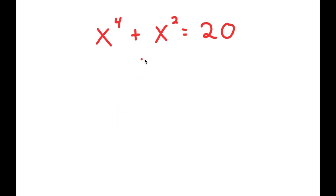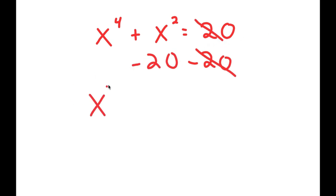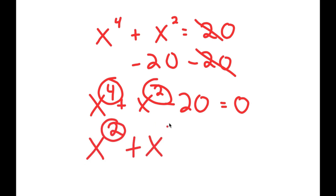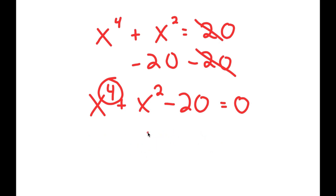In this equation, I have x to the power of 4 plus x squared is equal to 20. To solve this, I'm going to start by subtracting 20 on both sides so we can have all our terms on one side. So I get x to the power of 4 plus x squared minus 20 is equal to 0. Now this may seem like a quadratic equation, but it's not because we have the power of 4 as our primary term, and then that's led by the power of 2.